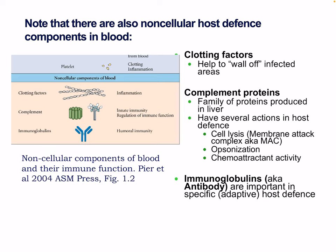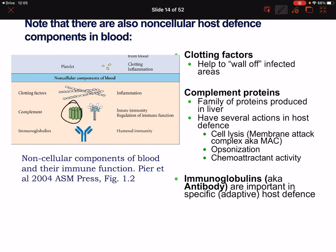There are also non-cellular host defense components in the blood. These include clotting factors, which help wall off infected areas and essentially contain them during an infection. We also have complement — a very complex system of over 30 proteins produced in the liver, which we'll cover in detail later. Complement has several actions in host defense including cell lysis via the membrane attack complex, opsonization, and chemoattraction. We also have immunoglobulins, or antibodies, which are important in adaptive immunity.